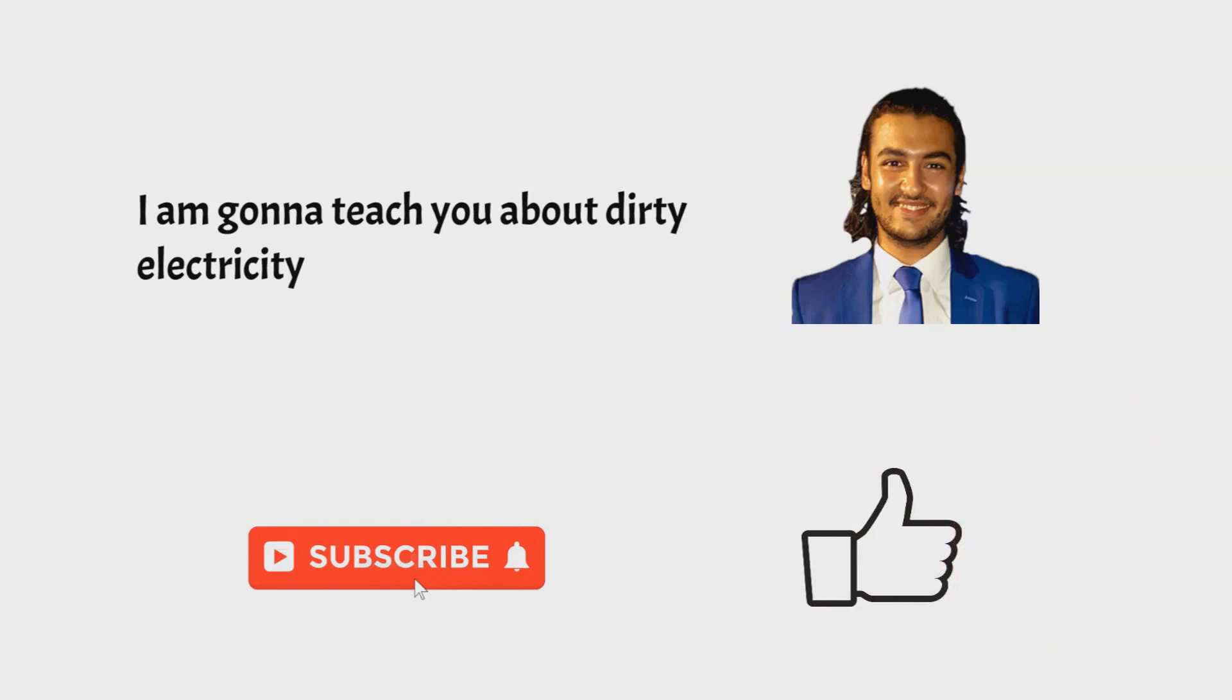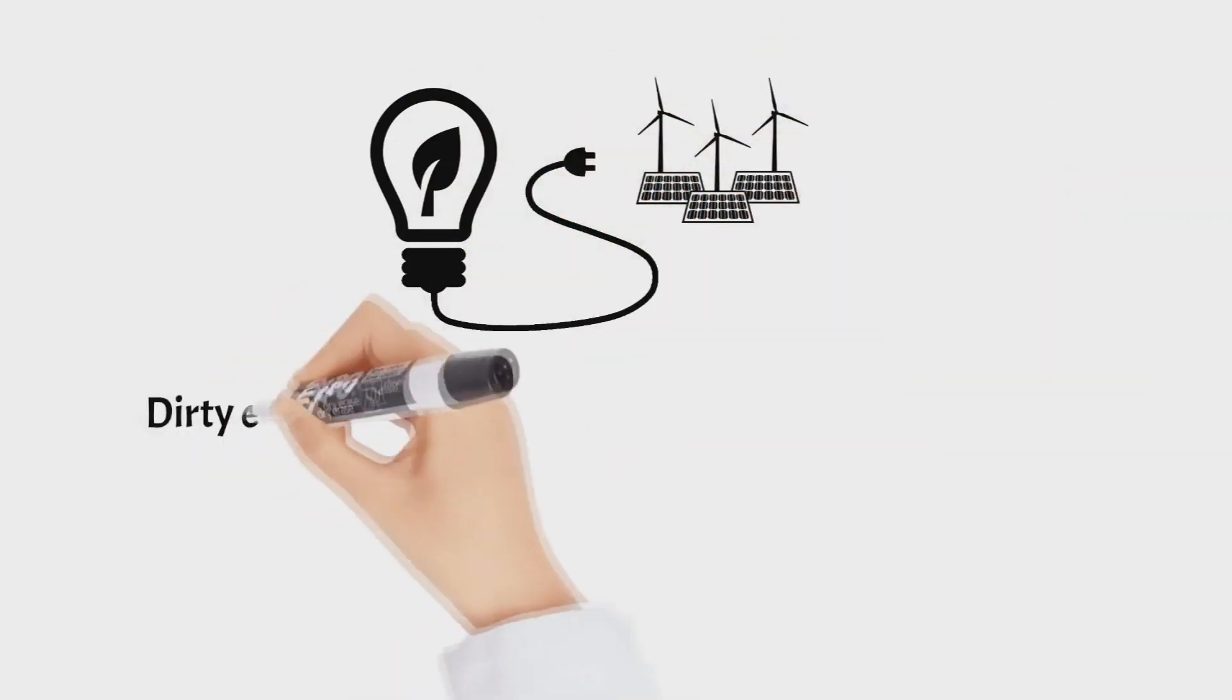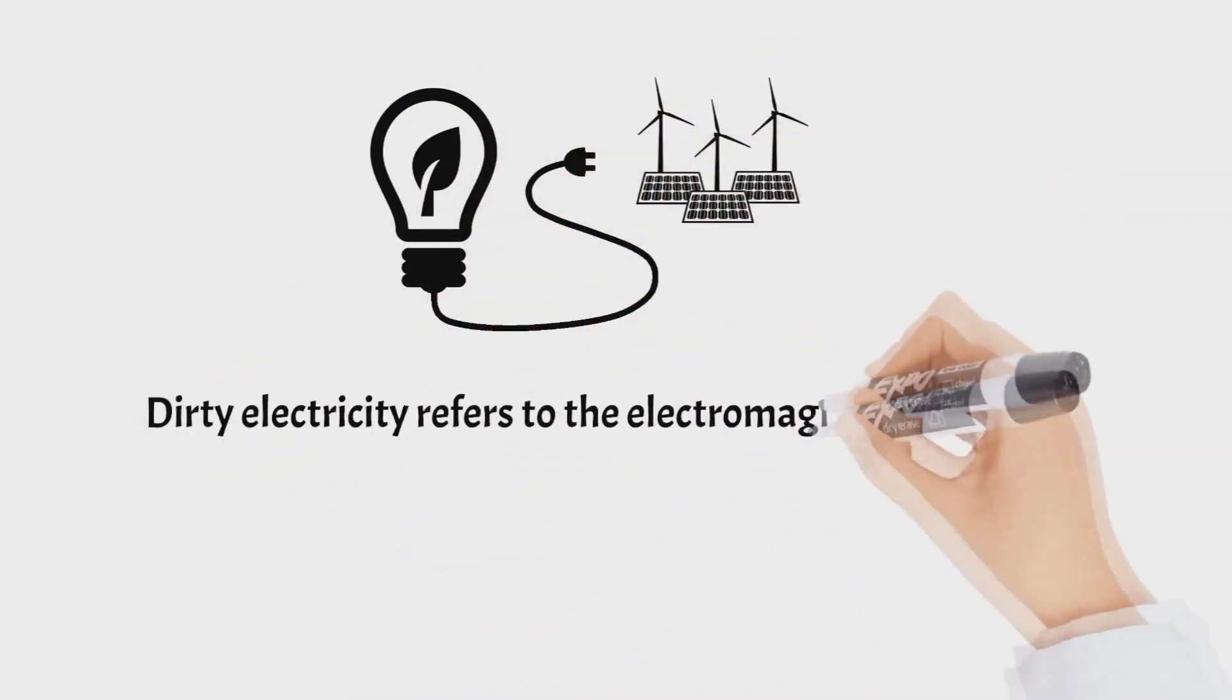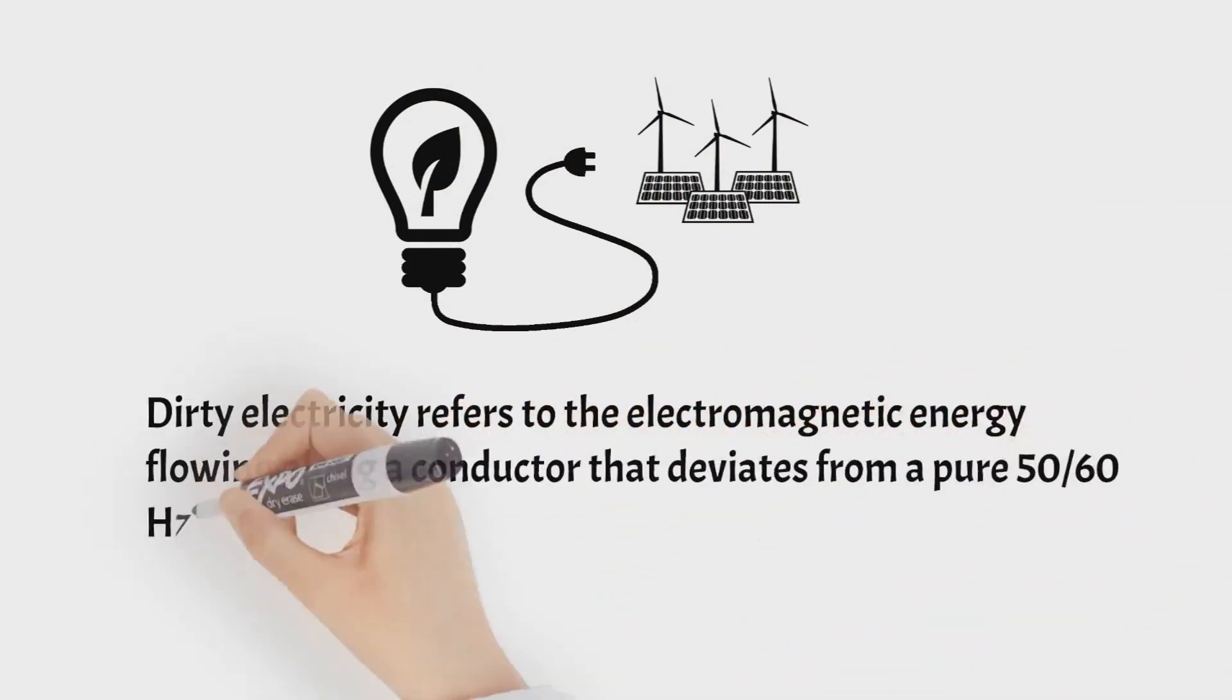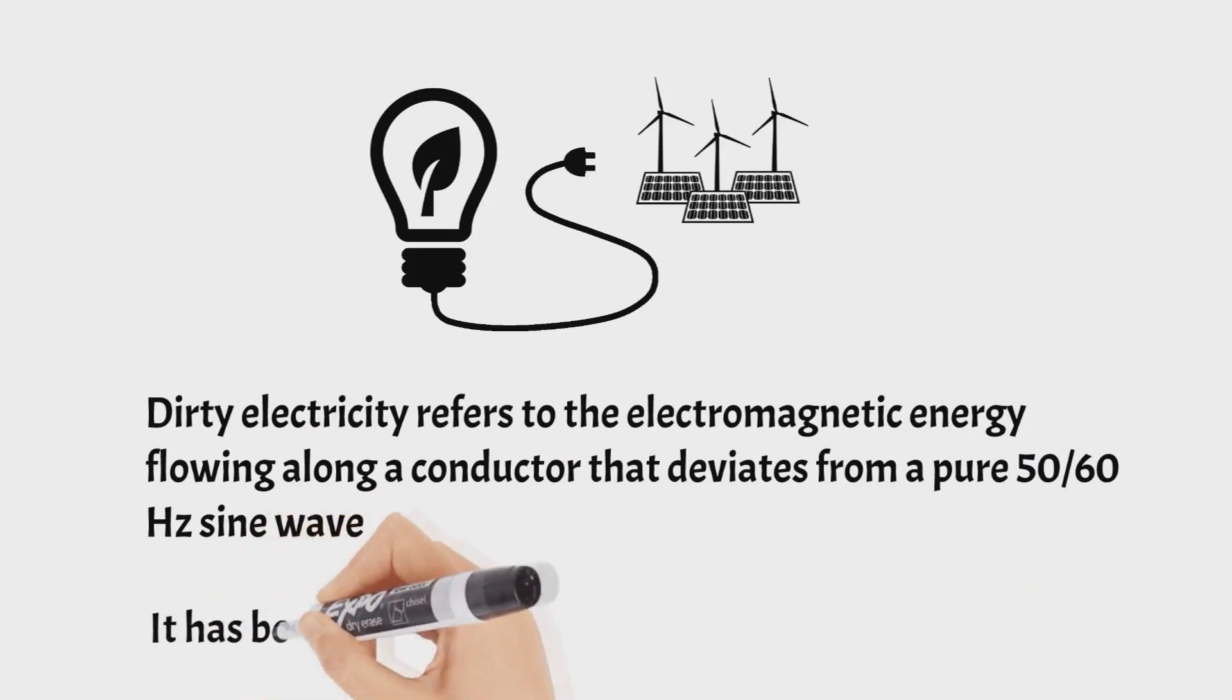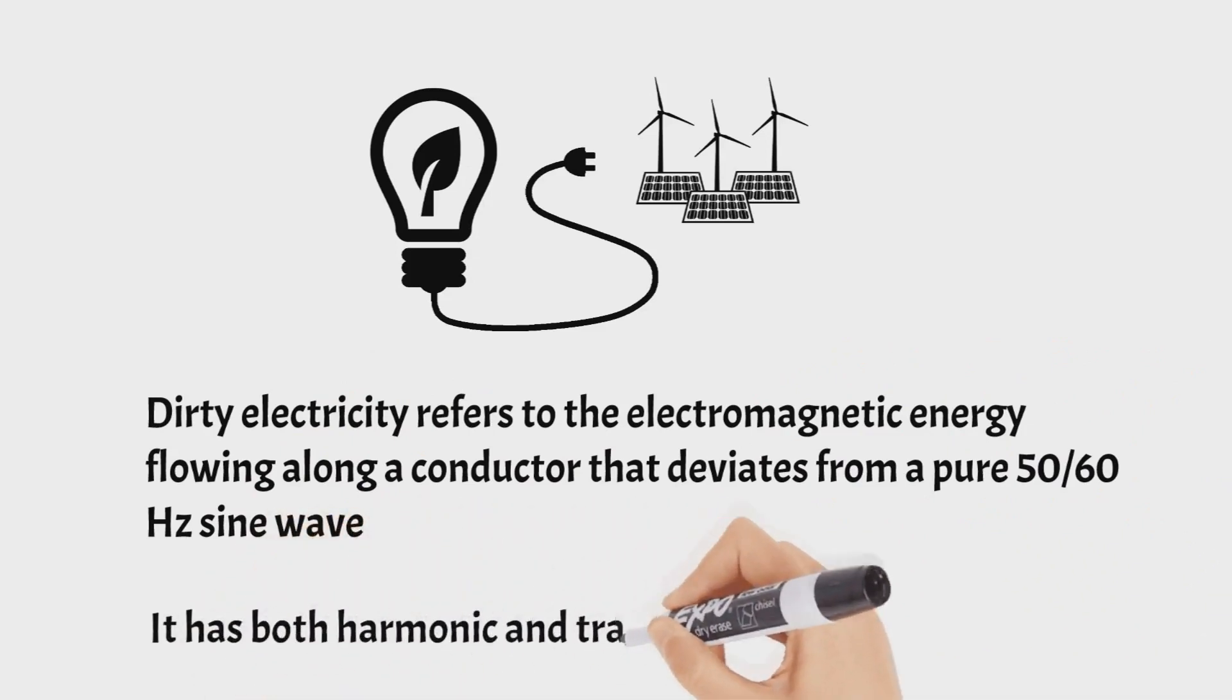So what does dirty electricity mean? Dirty electricity refers to the electromagnetic energy that flows along a conductor that deviates from a pure 50 or 60 hertz sine wave. This has harmonic and transient properties.